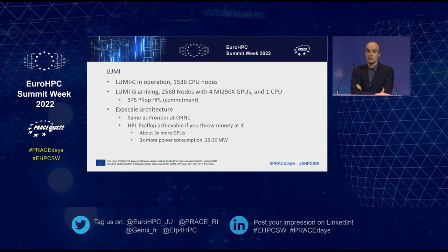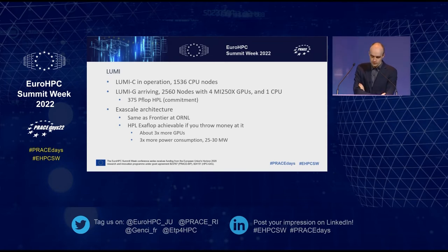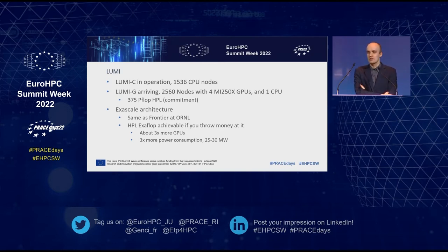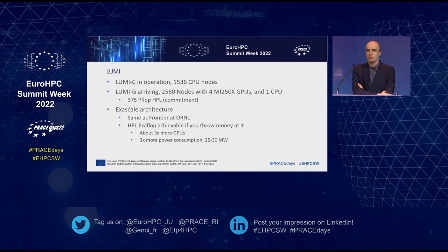LUMI-G, the GPU partition, is arriving. The first cabinets have landed in Europe. We're looking at 2,560 nodes with four GPUs each, where the committed performance is 375 petaflops for HPL. If you're looking forward towards exascale, one could argue that LUMI is an exascale architecture — it is, in the end, the same architecture that Frontier at Oak Ridge uses. So one could fairly easily achieve an exaflop in HPL by just throwing money at the problem: three times more GPUs, three times more power consumption, you'd be looking at a 30 megawatt system.